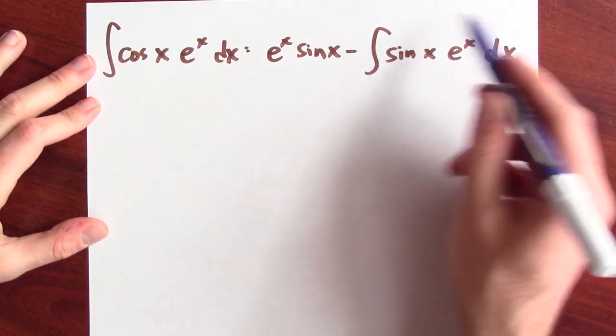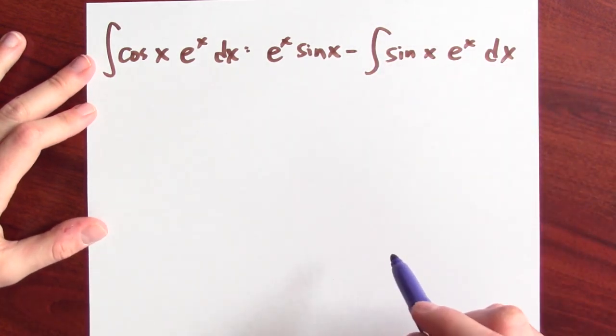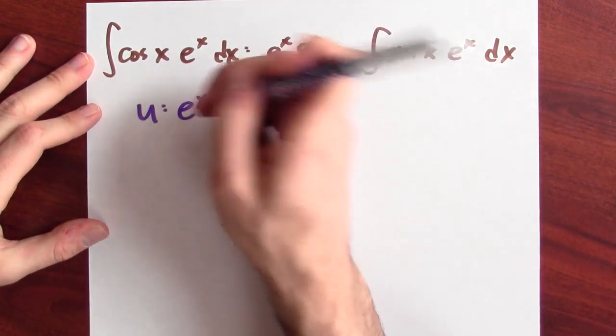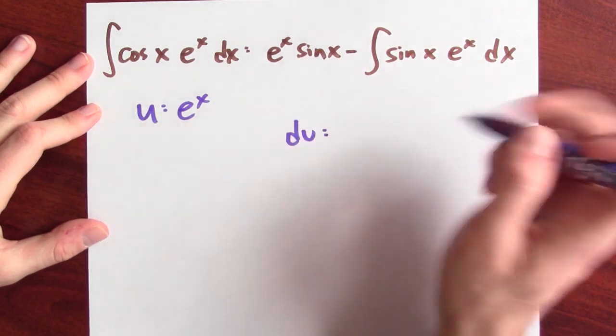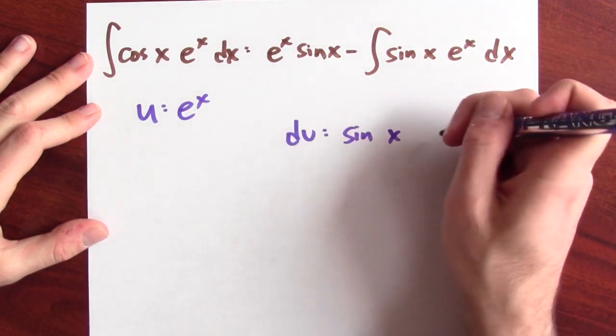So, let's persevere and transform that integral into yet another monster. The new monster in this case is this thing here. Let's try the same trick on that new integral. So, u will be e to the x again. And dv here will be just what's left over, sine x dx.